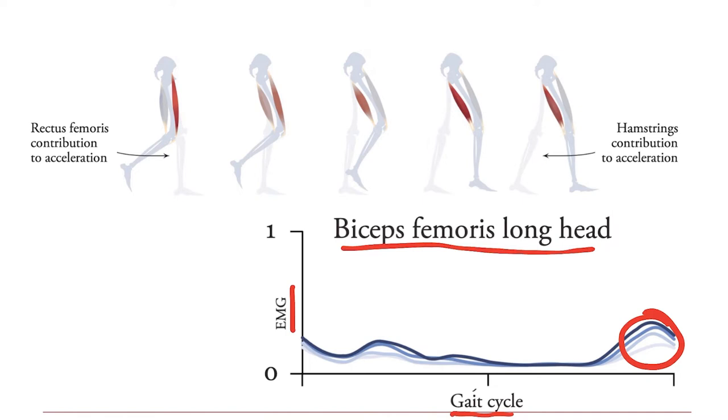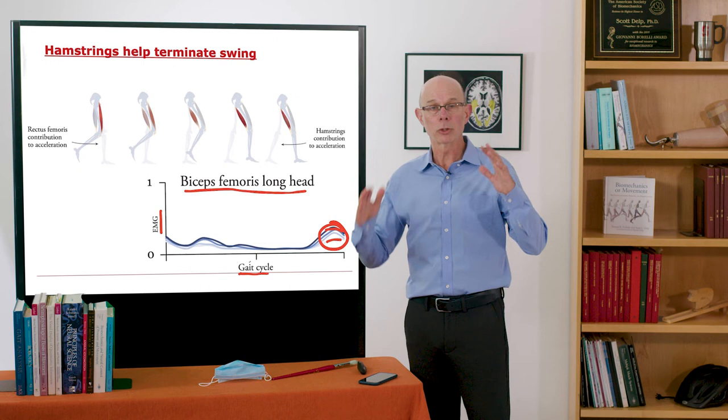There are a number of different plots here because here's slow walking and the dark blue is fast walking. And you see as you walk faster, your leg is swinging faster and you need more rectus femoris to initiate swing and more hamstrings to stop swing. So those two muscles punctuate the swing phase.